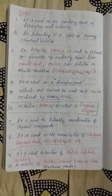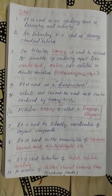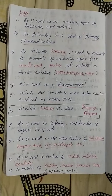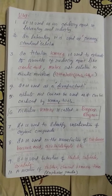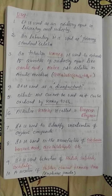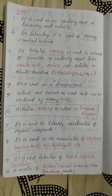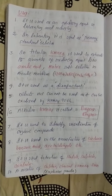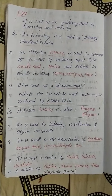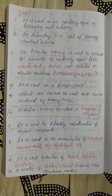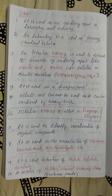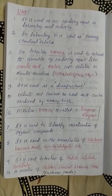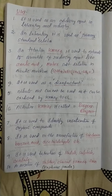We have successfully completed the D-block elements chapter, covering all important properties of D-block elements and important compounds including potassium permanganate and potassium dichromate.